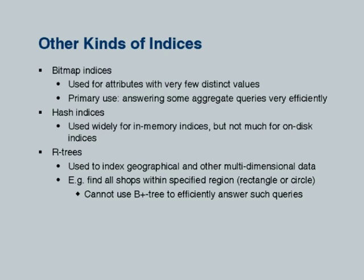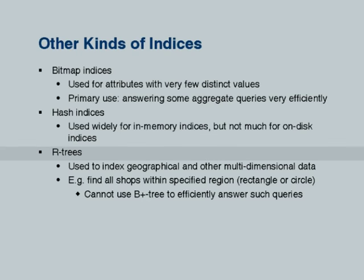B+ trees are very good for the most common kinds of queries, but there are a few other query types for which other indices are useful. Bitmap indices are useful for certain kinds of queries; R-trees are useful for certain others. You can read about these topics later. I will stop here and take questions.